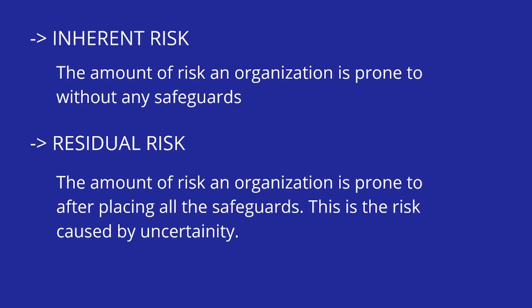There is also inherent risk — the amount of risk an organization is prone to without any safeguards. If a company doesn't follow any cybersecurity rules, how prone is it to attack? That's the inherent risk. Then there's residual risk — the amount of risk an organization is prone to after placing all safeguards. This is the risk caused by uncertainty. Even if you take all the measures, you aren't 100% safe, because a hacker might come up with a new technique. Just because you followed the rules and took extra steps doesn't mean you are completely secure.